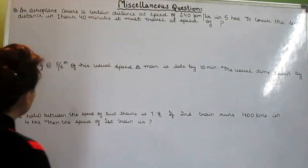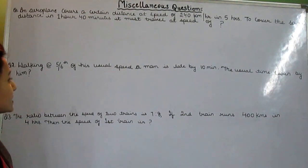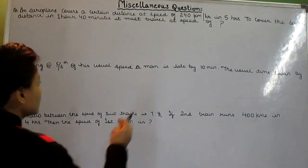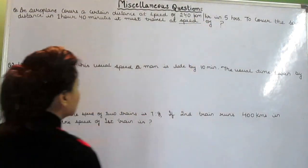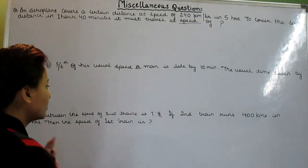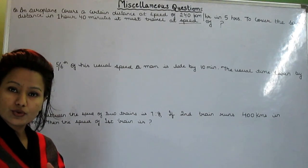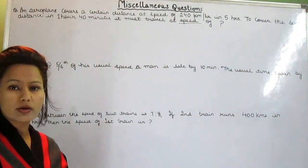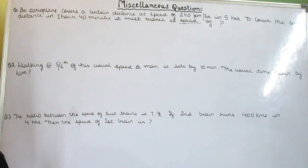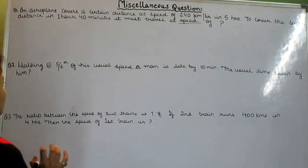Question one is: an aeroplane covers a certain distance at speed of 240 kilometers per hour in 5 hours. To cover the same distance in 1 hour 40 minutes, it must travel at speed of what? So we have to get the speed, and I would like to tell you that we don't have much space, so I'm just going to use a trick. I'm not going to apply any formula or rule, so let's start using the trick.